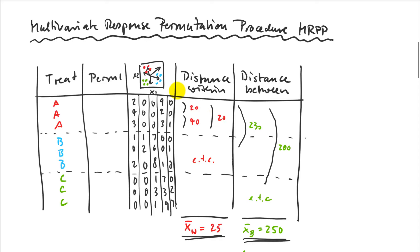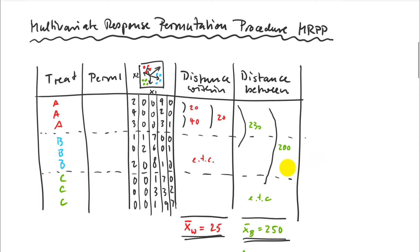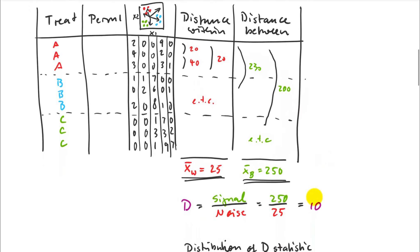If I do all these combinations - first with second, first with third, first with second, and so on - and I also do the same for all the distances between that are larger, I can calculate an average distance for both distances within and distances between. Let's assume that my distances between are 10 times larger than my distances within on average. That would give me a signal to noise ratio of 10.